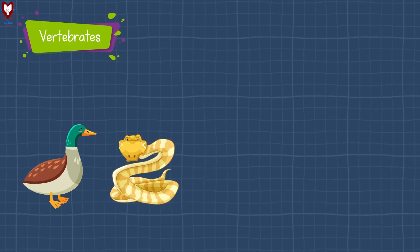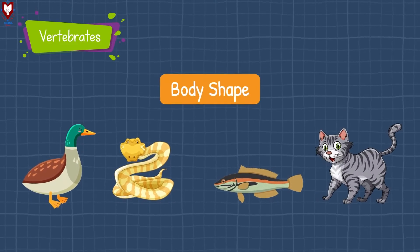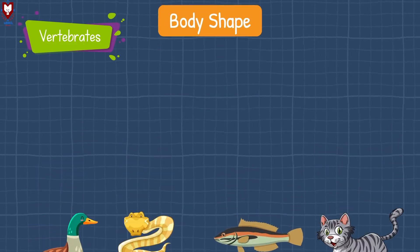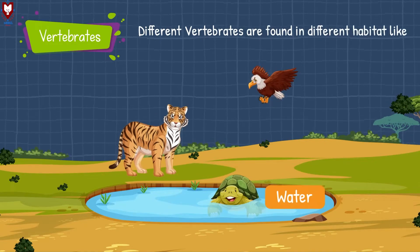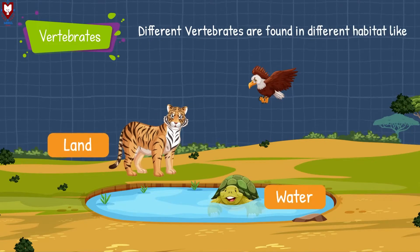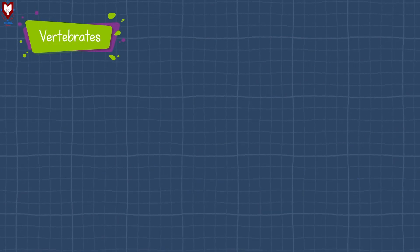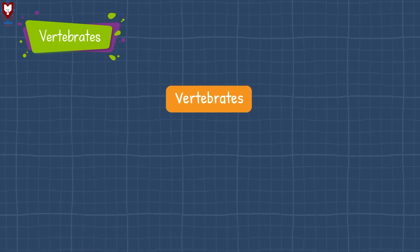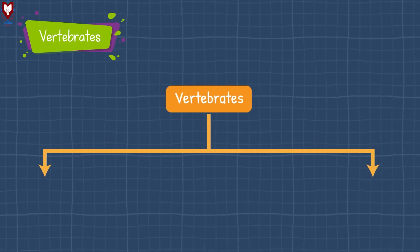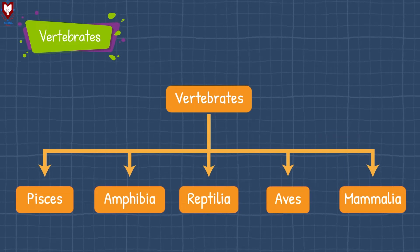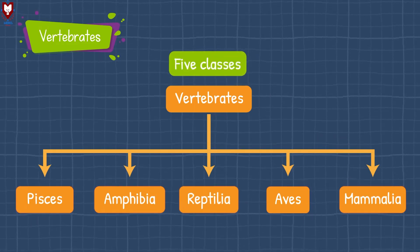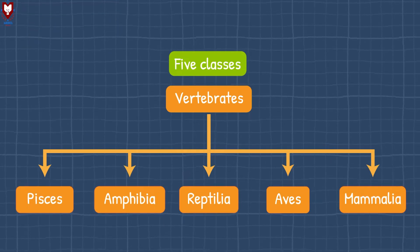Different vertebrates also have different types of body shapes. Different vertebrates are found in different habitats like water, land, and air. So, the vertebrates are classified into different classes — they are classified into 5 classes. Let's study about each class one by one in detail.